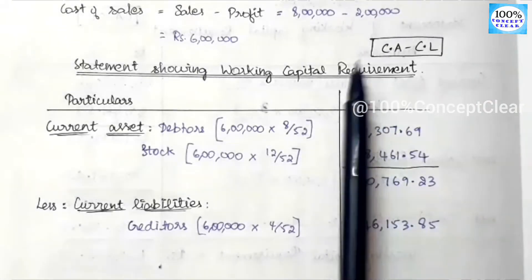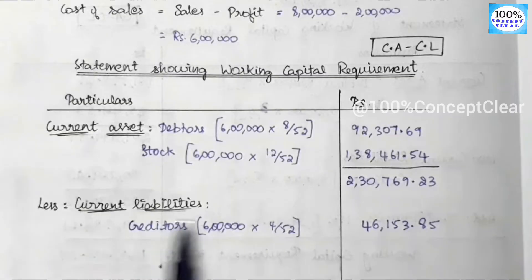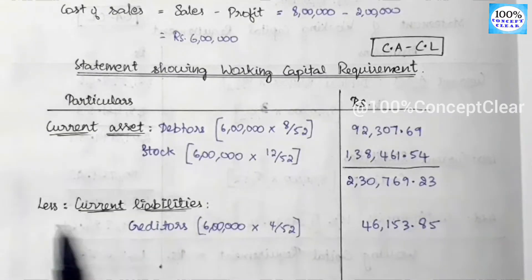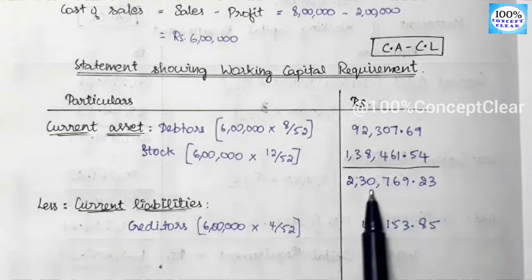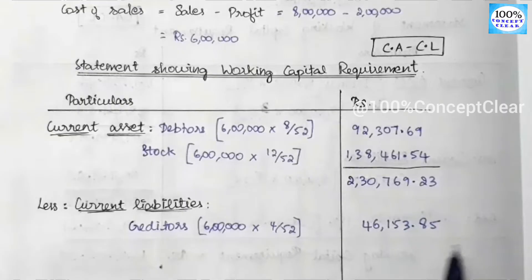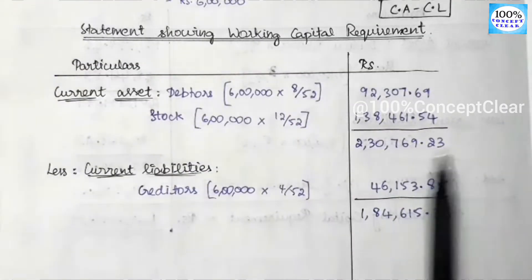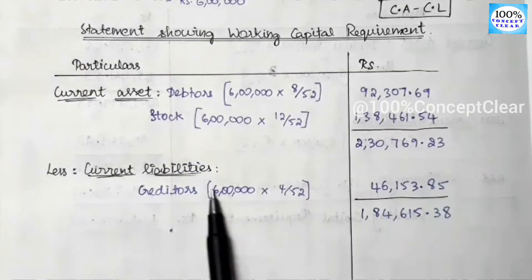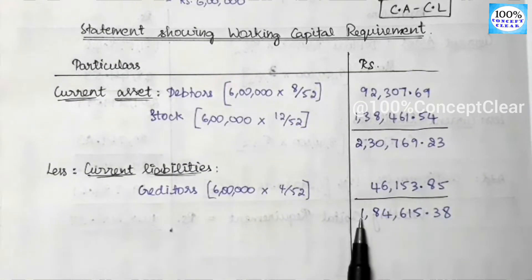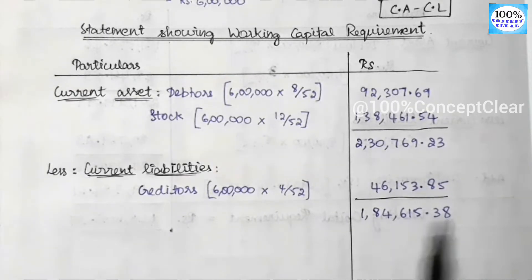The working capital formula is Current Assets minus Current Liabilities. So we take the total current assets and subtract the current liabilities. The net working capital (before contingencies) comes to ₹1,84,615.38.